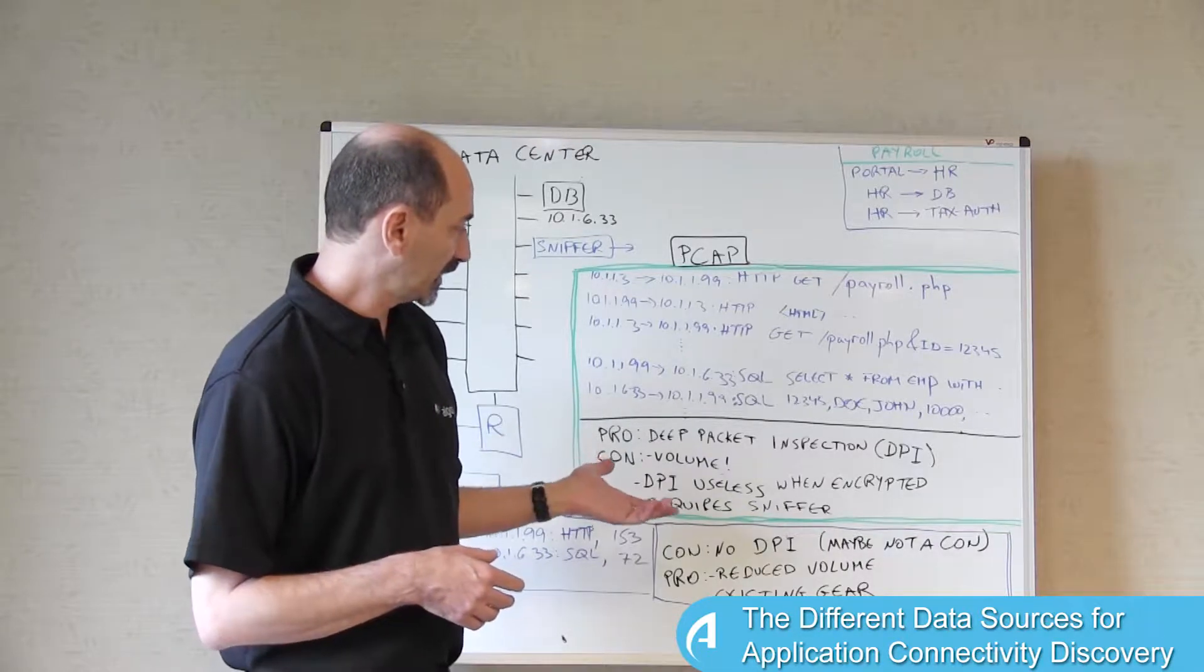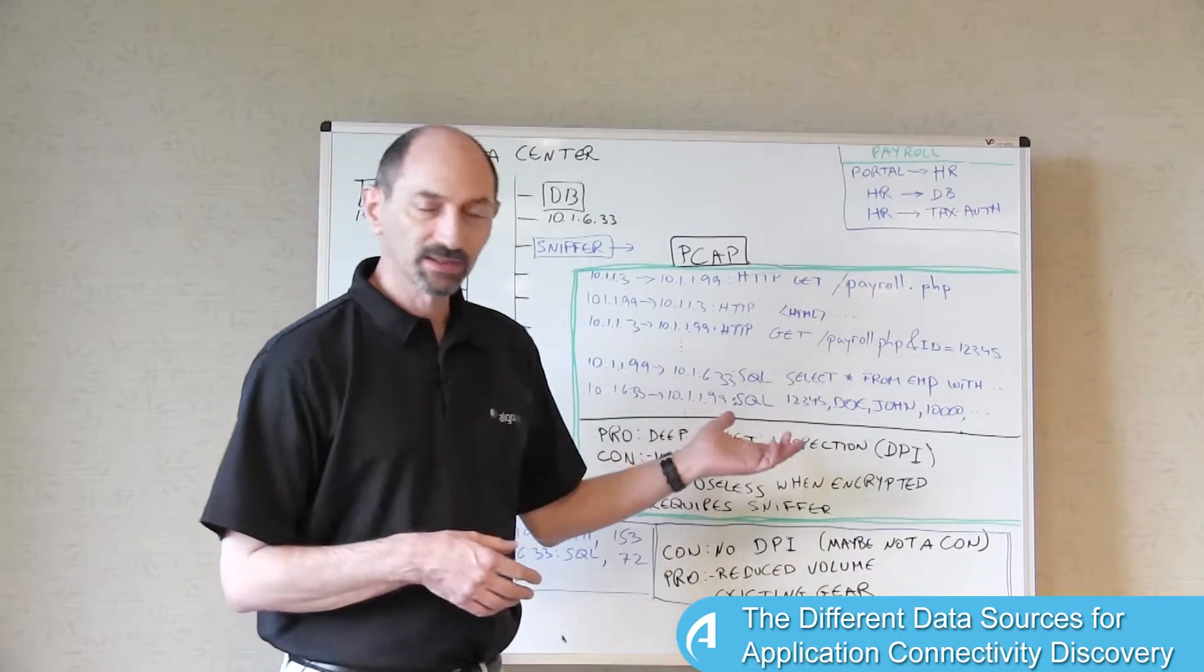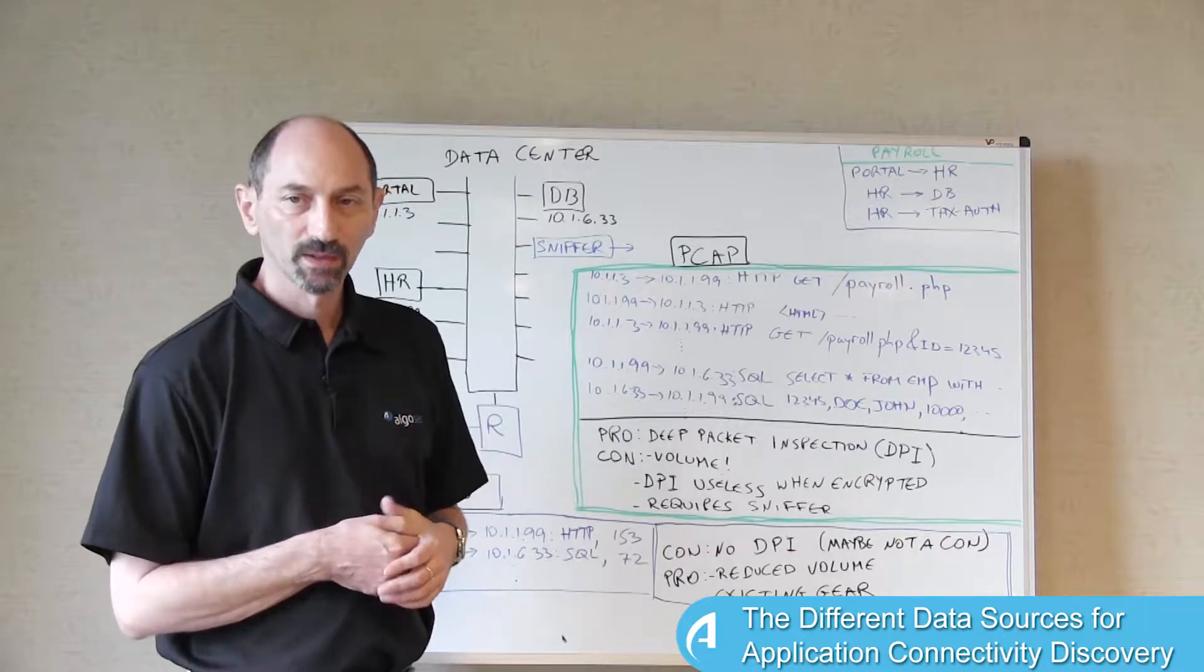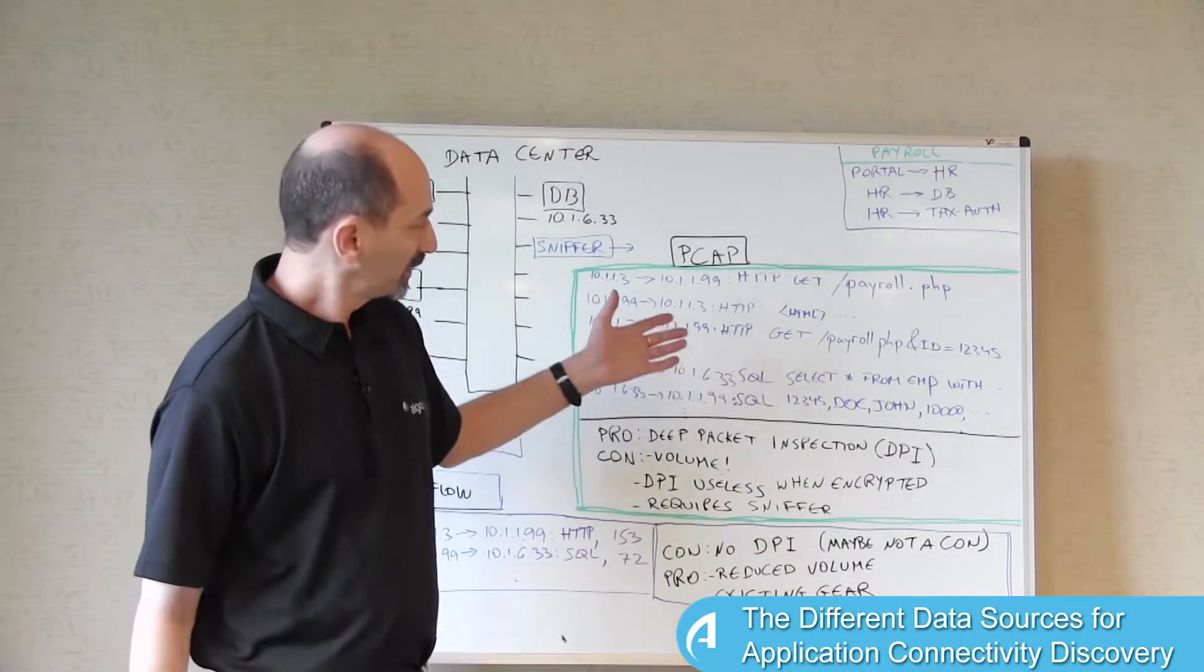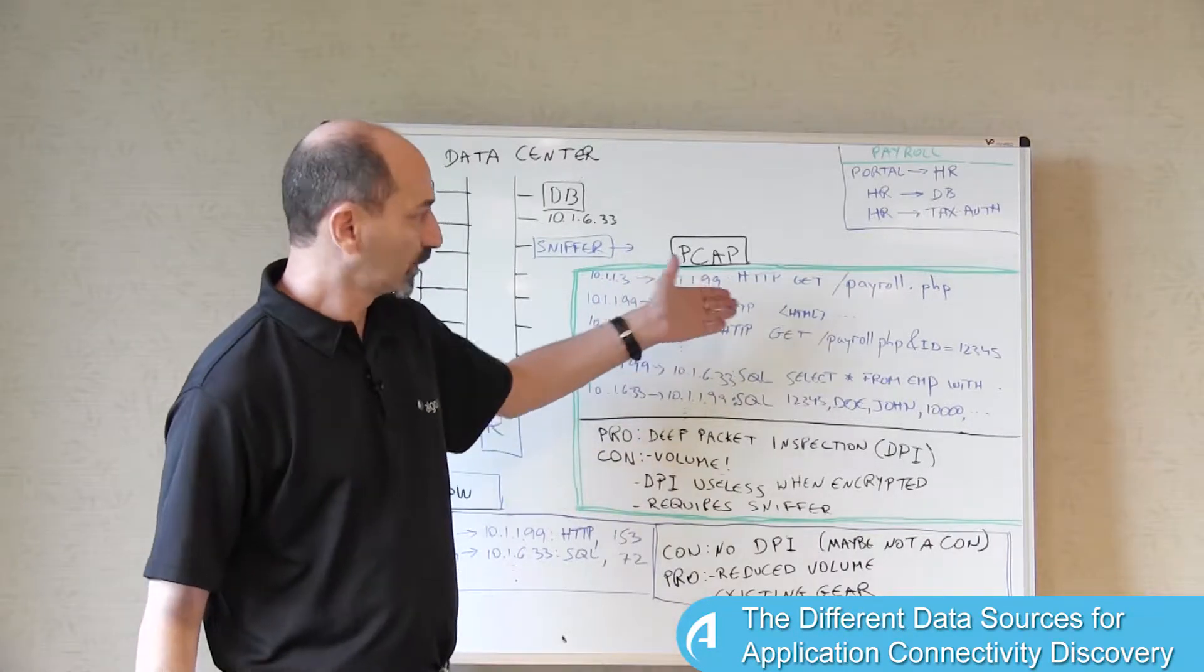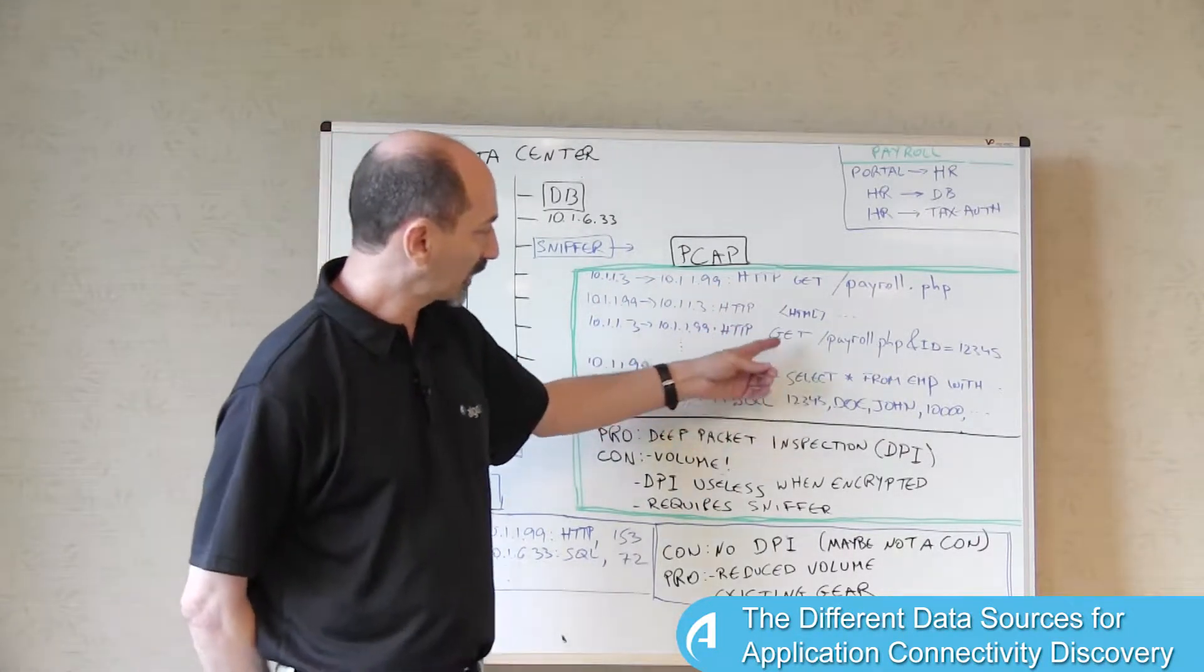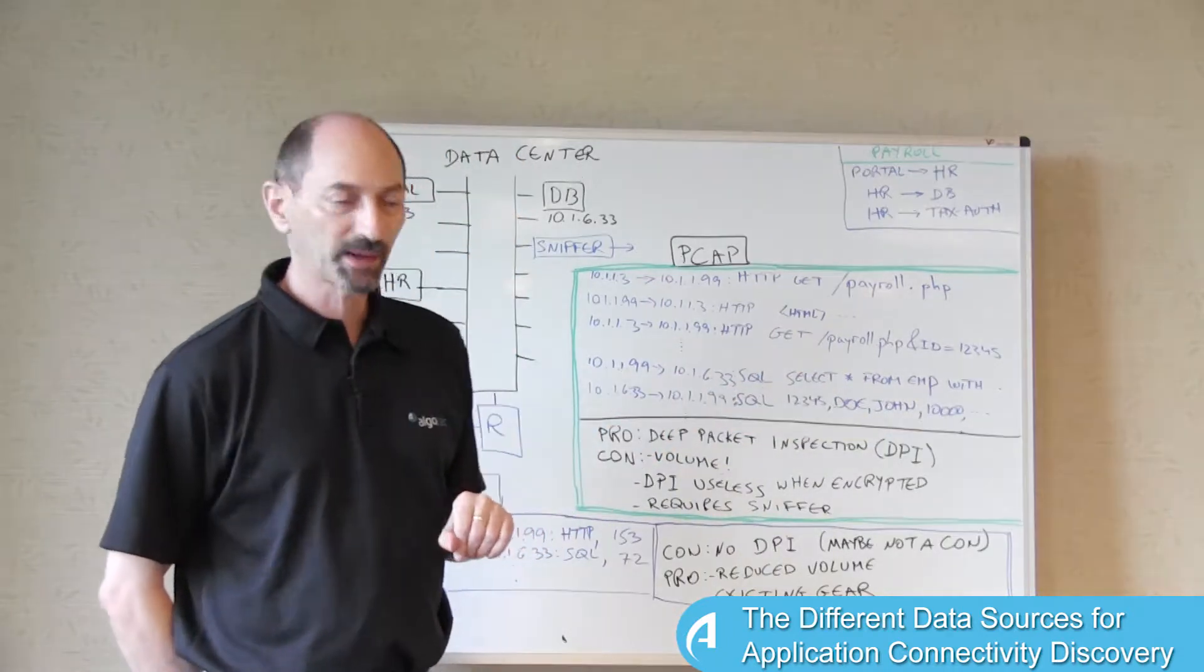The second thing is this data potentially is becoming less and less useful because of the use of encryption. To use DPI, the software has to be able to look into the packets and understand what's there and recognize the various strings in the packets.